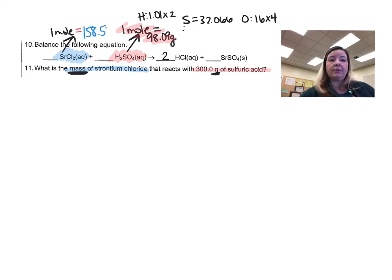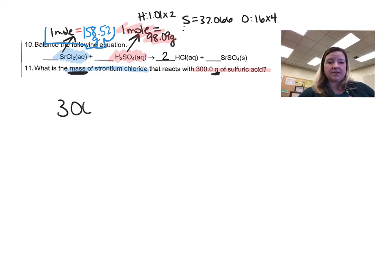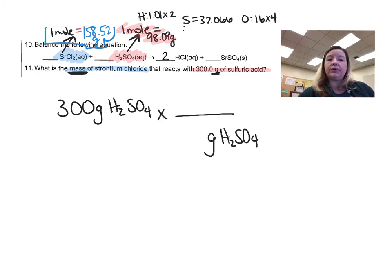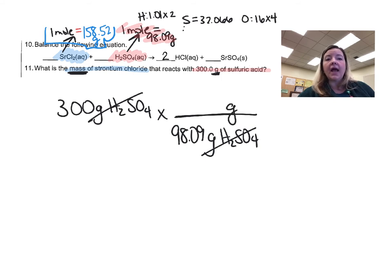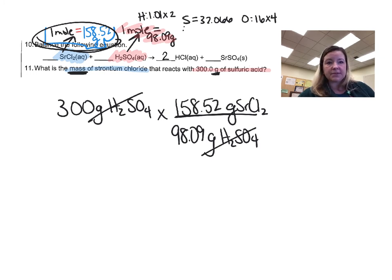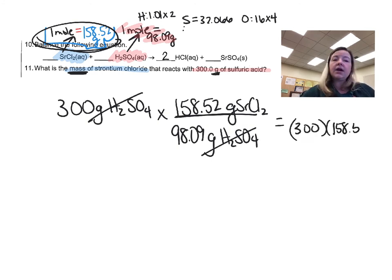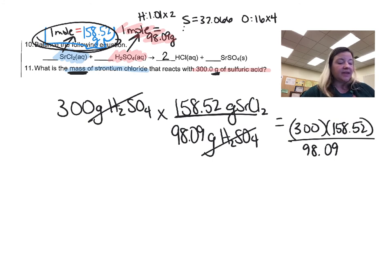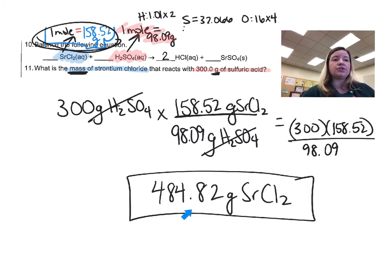So we start with what we're given — 300 grams of sulfuric acid. Grams of sulfuric acid go on the bottom; according to my reaction one mole is 98.09 grams, so that goes on the bottom. According to the reaction I need one mole of strontium chloride, and one mole has a mass of 158.52 grams — that goes on top. My grams of sulfuric acid cancels out. I take 300, multiply by 158.52, divide by 98.09, and find that I need 484.82 grams of strontium chloride if I have 300 grams of sulfuric acid.